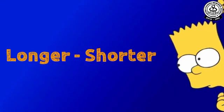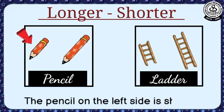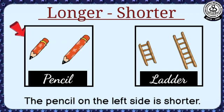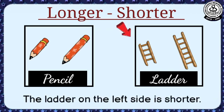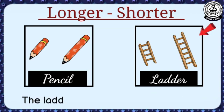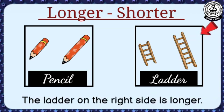Longer, shorter. The pencil on the left side is shorter. The pencil on the right side is longer. The ladder on the left side is shorter. The ladder on the right side is longer.